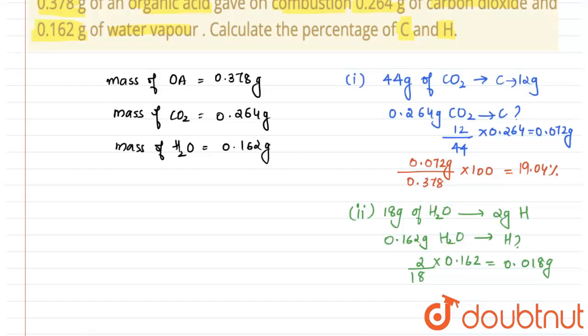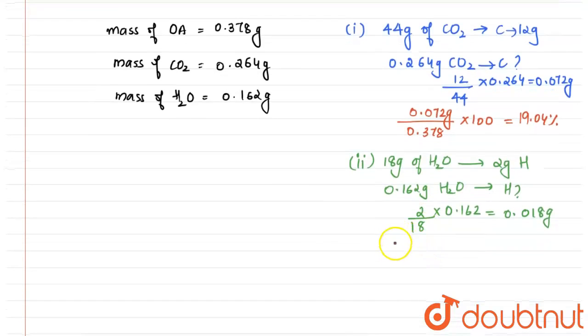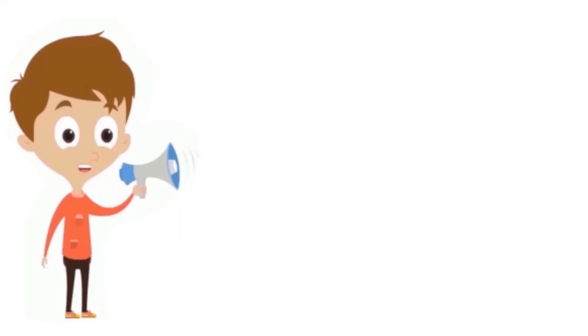Now we need to calculate the percentage of hydrogen atom, so that will be 0.018 gram which we just calculated divided by the total mass of the organic compound that is 0.378 multiplied by 100. That will be equal to 4.76 percentage. So I hope the answer is clear to you, thank you.